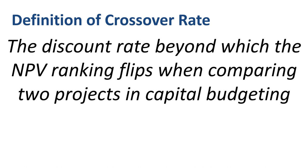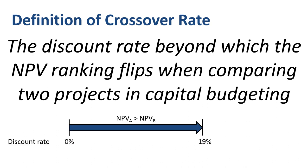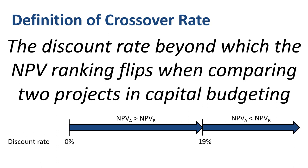In the example explored in this video, for discount rates from 0% to 19%, the net present value of project A exceeds the net present value of project B, so you would prefer A over B when making an investment decision. However, for discount rates above 19%, the NPV of project A is lower than that of project B — you would now prefer B over A. The ranking flips.